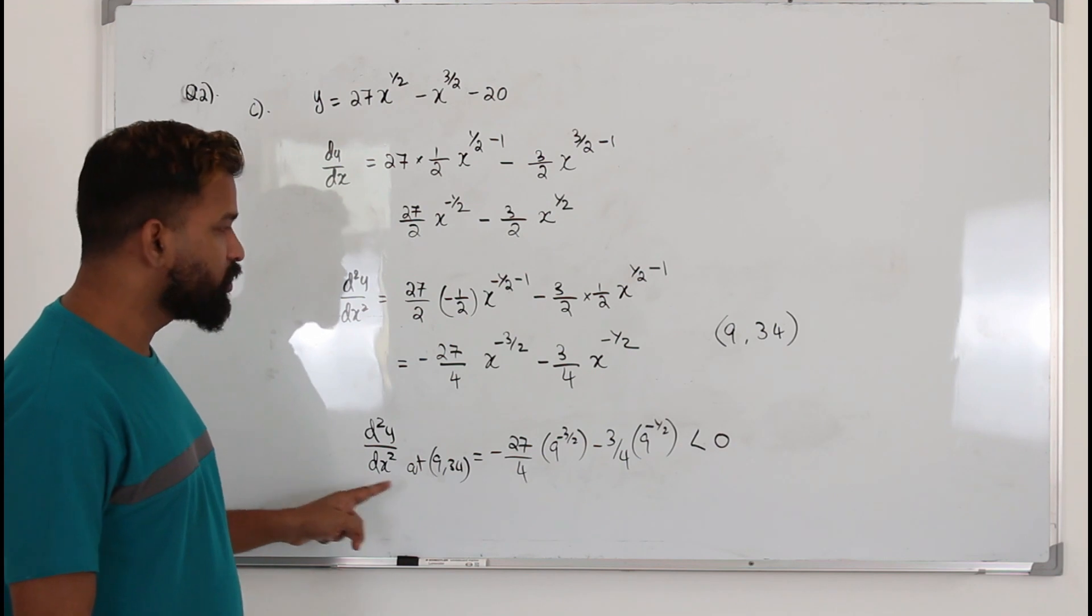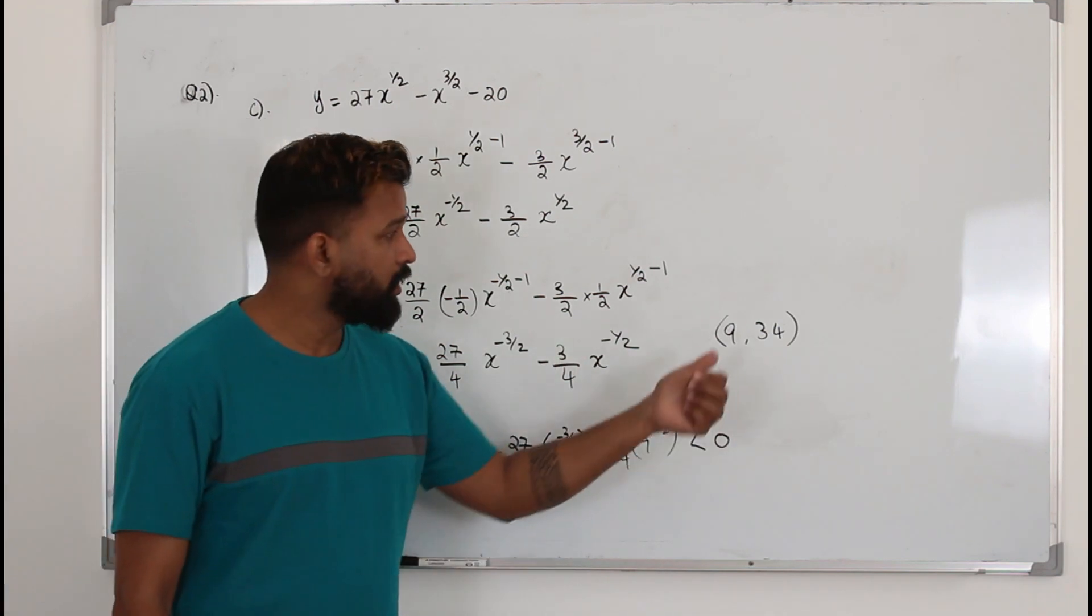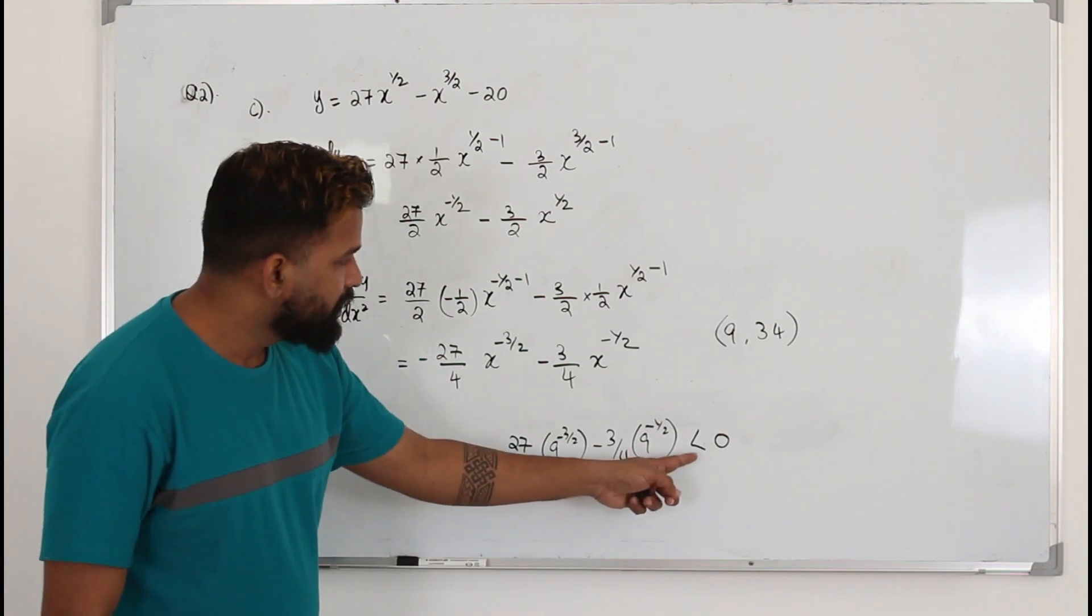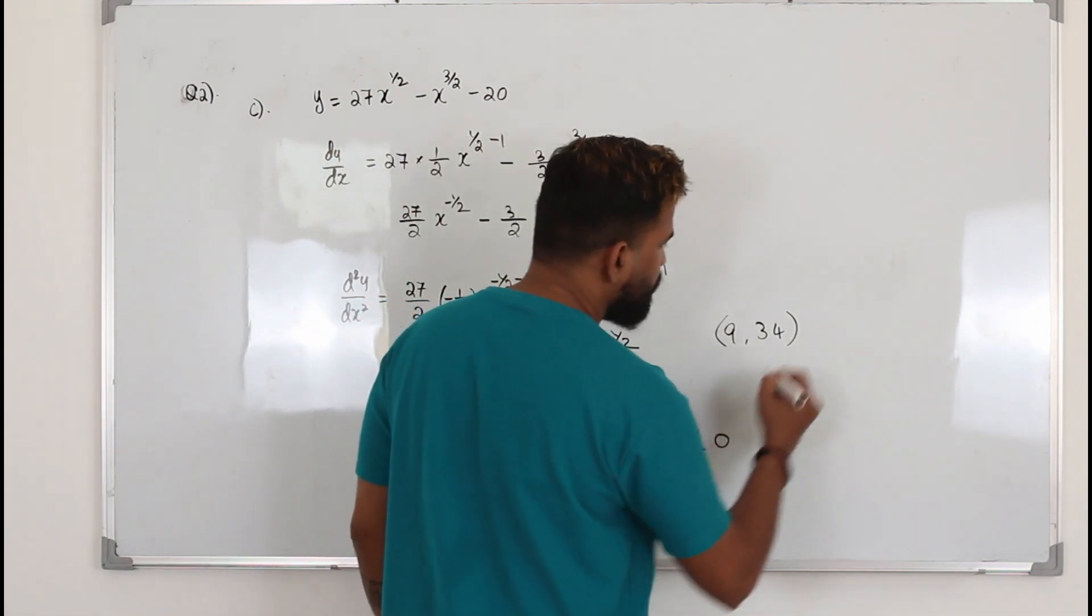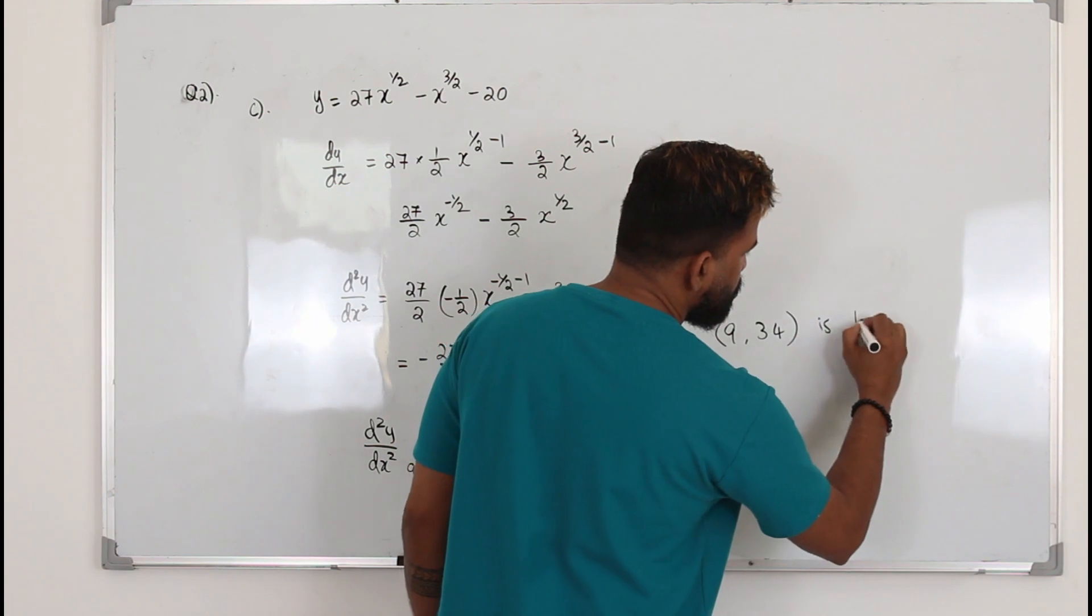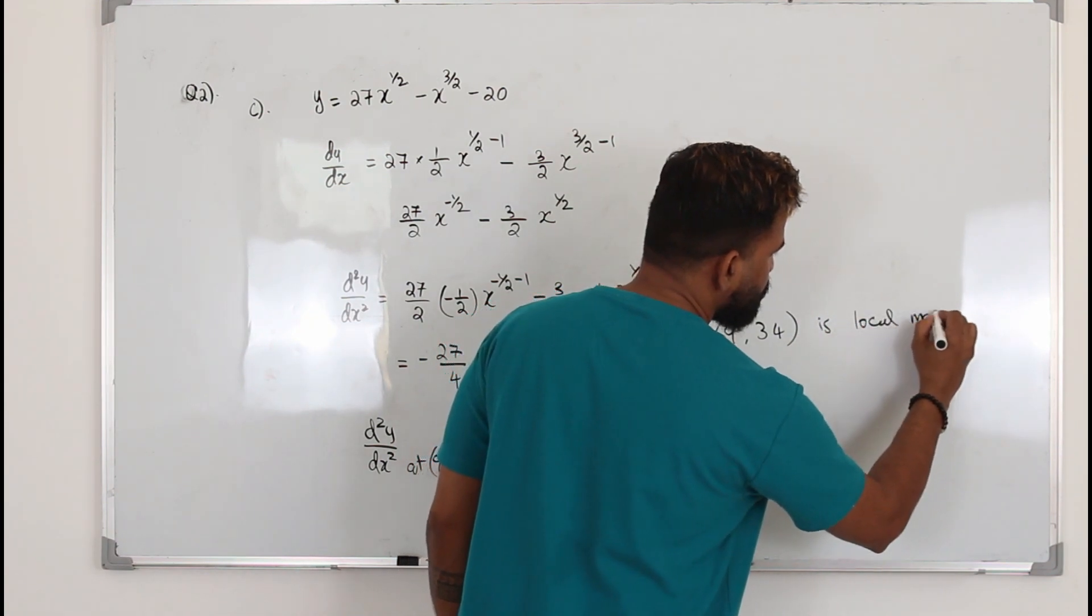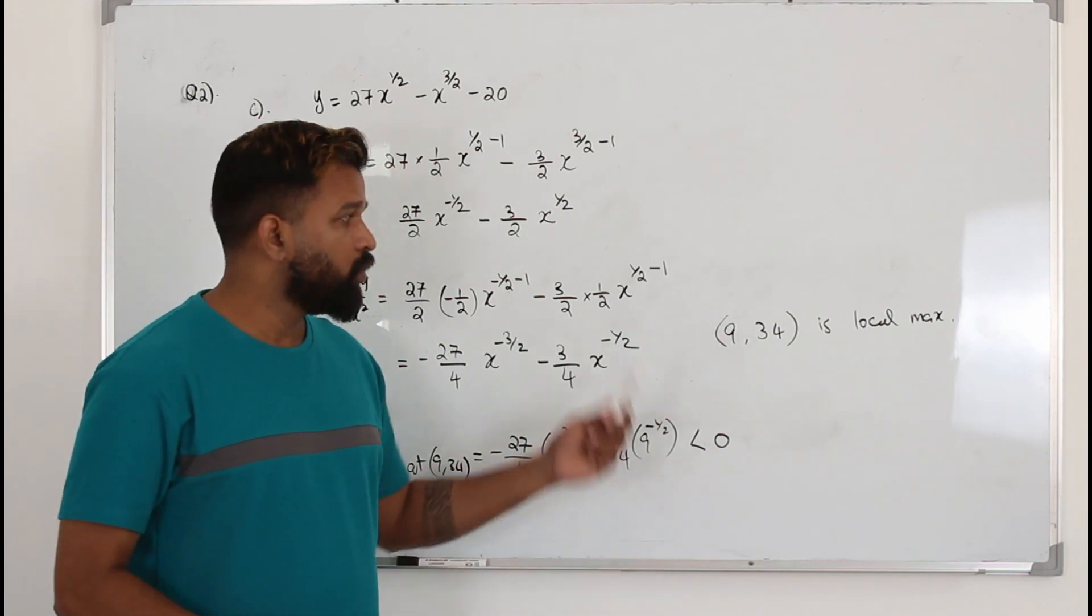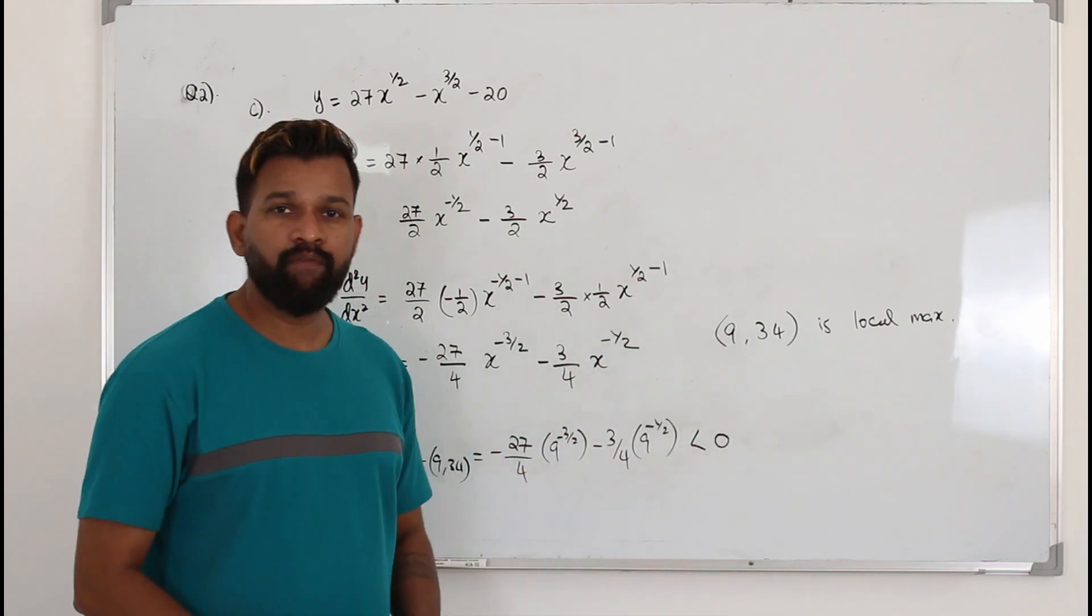If d square y by dx square is a positive number, the point is a local minimum. If it's less than 0, a negative number, this is local maximum. And if it's 0, you can write the point as point of inflection.